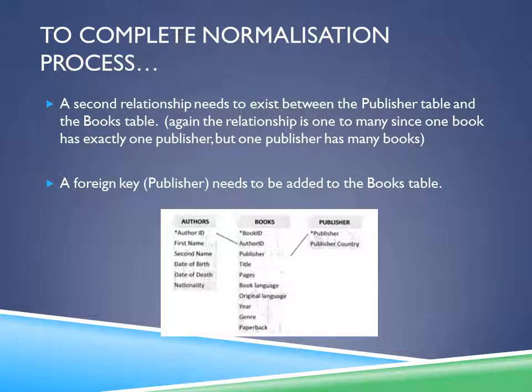To complete the normalization process, a second relationship needs to exist between the publisher table and the books table. Again the relationship is one-to-many, since one book has exactly one publisher but one publisher can have many books. A foreign key for publisher needs to be added to the books table. As you can see, the normalization process is complete as the foreign key is added and all tables are related together.